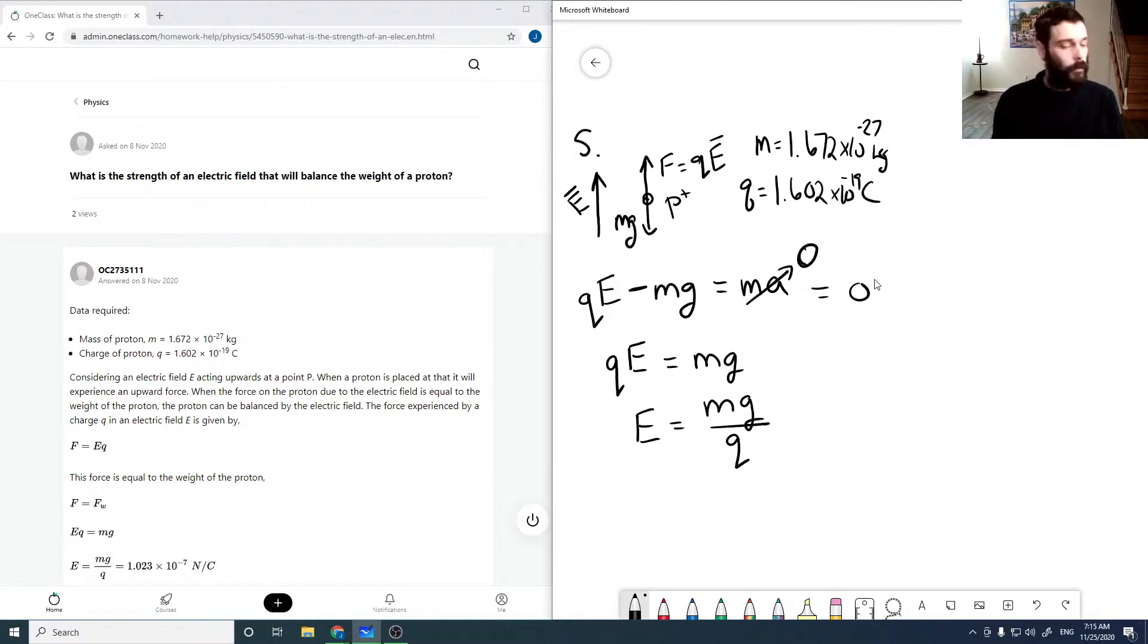And g is 9.8 meters per second squared. So then this is 1.672 times 10 to the minus 27 kilograms, 9.8 meters per second squared, all over the charge which is 1.602 times 10 to the minus 19 coulombs.